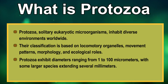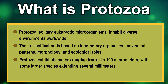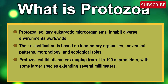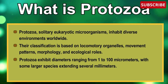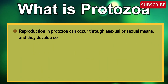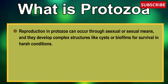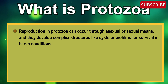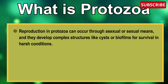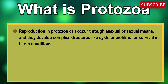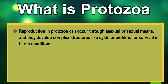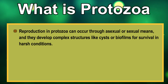Protozoa exhibit diameters ranging from 1 to 100 micrometers, with some larger species extending several millimeters. Reproduction in protozoa can occur through asexual and sexual means, and they develop complex structures like cysts or biofilms for survival in harsh conditions.